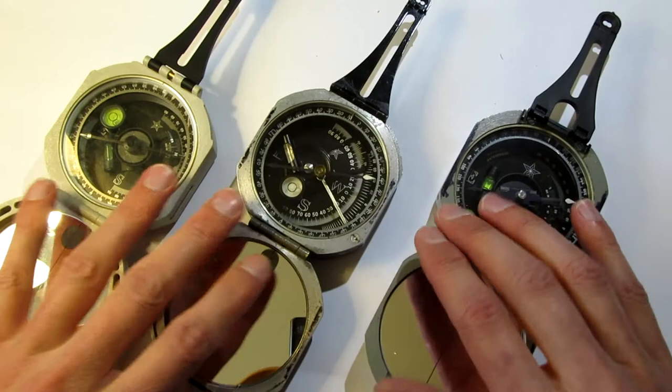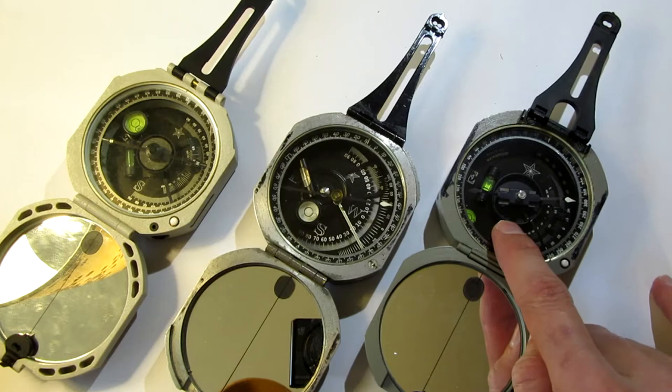Two of them are quadrants, which are these two, and one of them is an azimuth that is 0 to 360, and that's this one here.